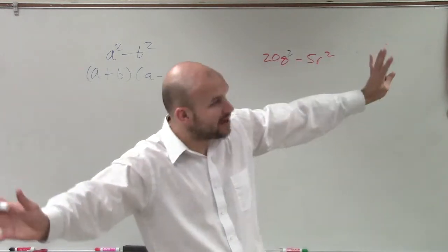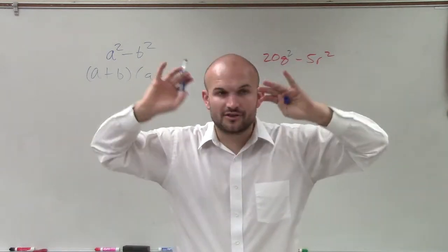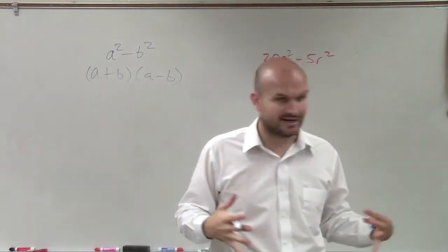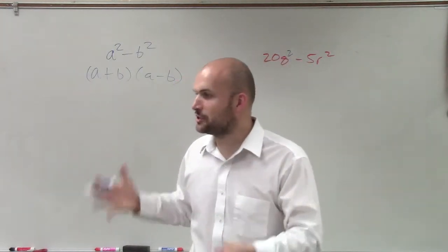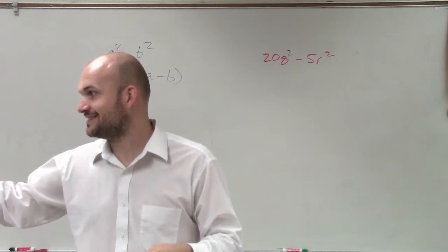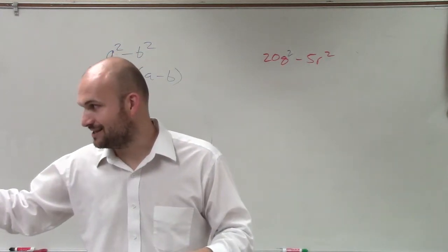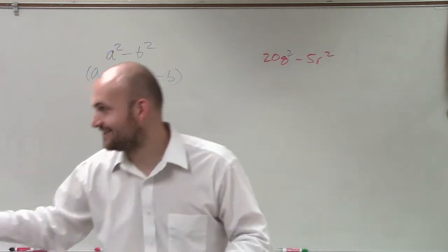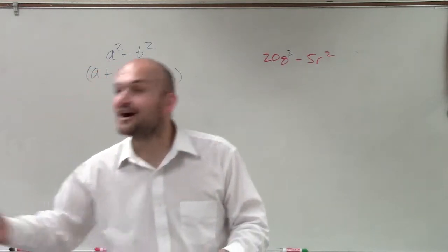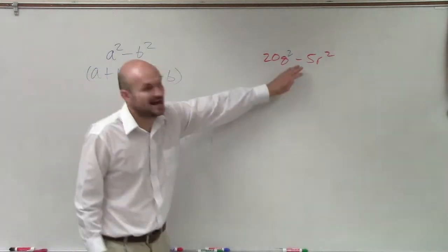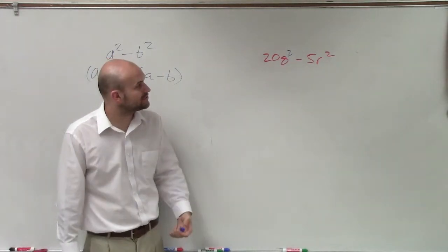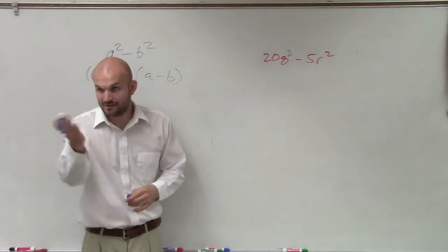So before you just say, oh, stop, it's prime, the first thing, the first rule of factoring always is to look to factor out a GCF, a greatest common factor. And can I factor something out between 20q squared minus 5r squared? Five. Five. Go ahead.